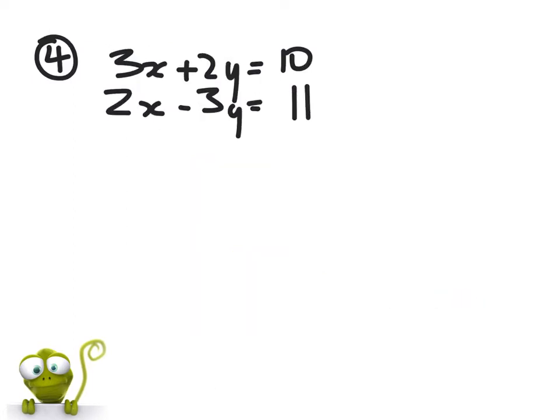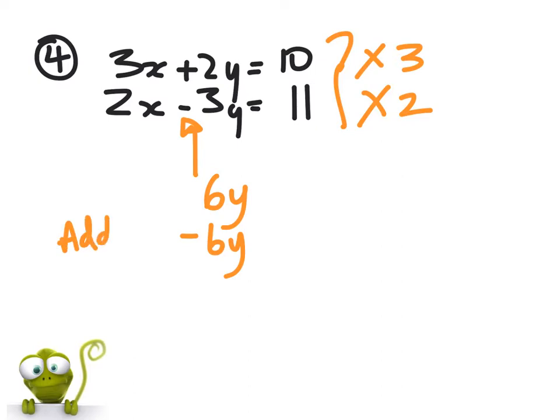Question four: simultaneous equations. We need to decide what we're getting rid of. Most people tend to go for getting rid of the y's, so I'm going to take the top equation and times it by 3, the bottom equation and times it by 2. That's going to give us 6y and minus 6y in this position. Because these are different, it's going to be an add. You're going to end up with x equals something. Substituting back in gives you y equals something.